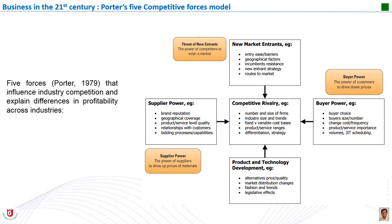Buyer power also rises when many suppliers offer similar, undifferentiated products — for example, with airline tickets, buyers have considerable buyer power. The power of suppliers is high when they are the only option available and can charge more for their products and services. Microsoft is an example: given the dominance of its Windows operating system, PC assemblers risk losing customers if they don't install it, so Microsoft can demand higher prices. Walmart suppliers, by contrast, are an example of suppliers with low supply power, as Walmart can almost always find a close alternative.